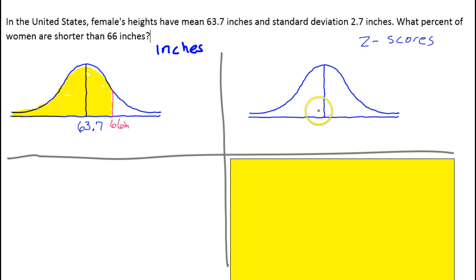The mean z-score is always zero, so we need a z-score for this 66. We need to convert this to a z-score. The way you convert something to a z-score is you use this formula. The z-score is going to be any value minus the mean divided by the standard deviation.